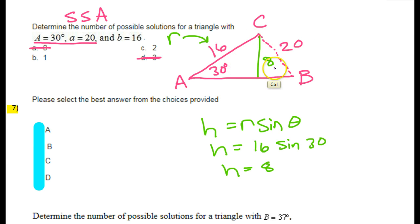The only triangle is the outer triangle that looks like this. So the answer is B, one triangle only.